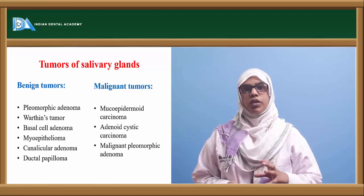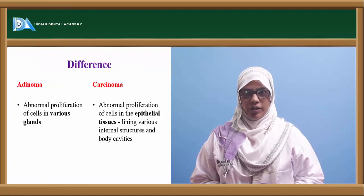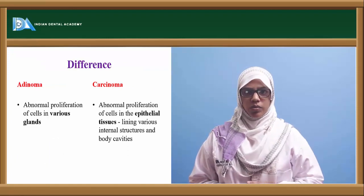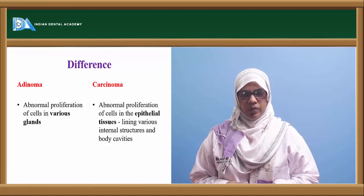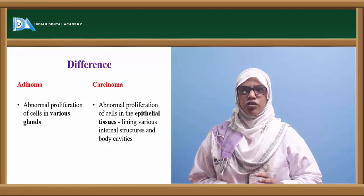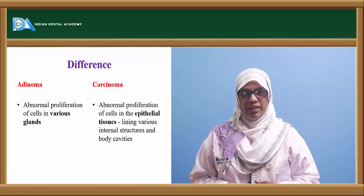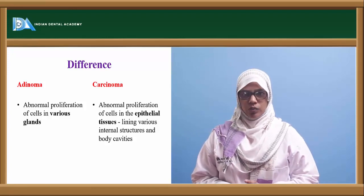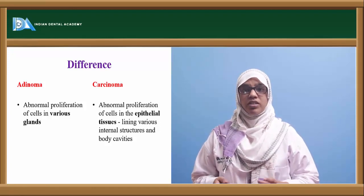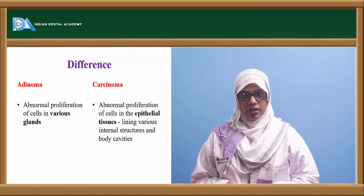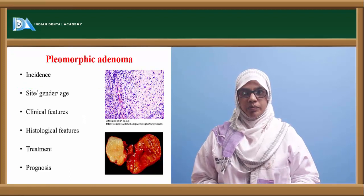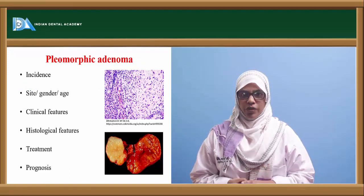I'm going to discuss a few of the important tumours today. Before we go into the details, let's discuss the main difference between adenoma and carcinoma. Adenoma is abnormal proliferation of cells in various glands such as the salivary glands and sweat glands. Whereas carcinoma is abnormal proliferation of cells in the epithelial tissues lining the various internal structures of the body cavity. So adenoma affects the glands, whereas carcinoma affects the epithelium.